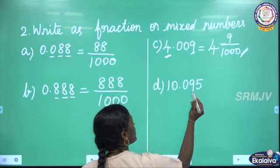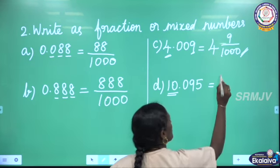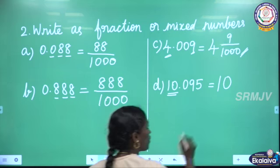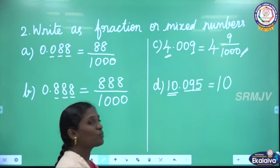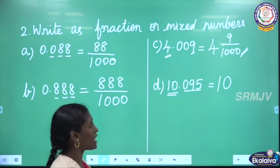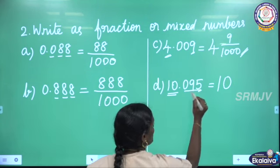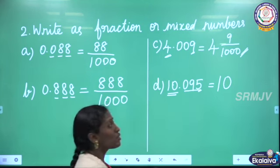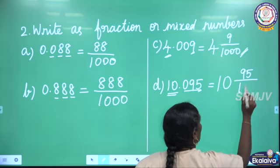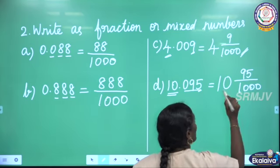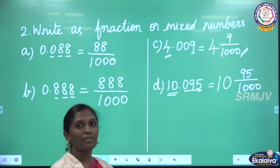Then 10.095. Here also 10 is the whole number part, so we write 10 as the whole number. Then we write the decimal part 0.095 as a fraction. The last decimal place is thousandth, so 95 by 1000. So 10 and 95 by 1000 is the required mixed number.